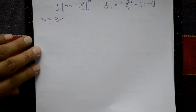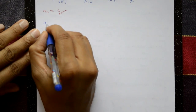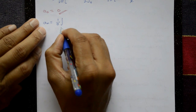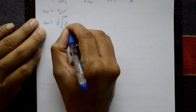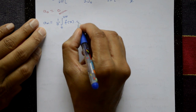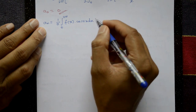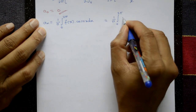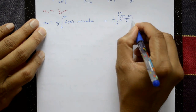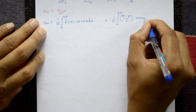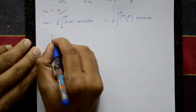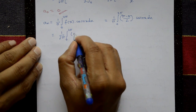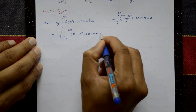Now find aₙ. The formula is aₙ = (1/π) × integration from 0 to 2π of f(x)cos(nx) dx. Substituting f(x) = (π - x)/2: aₙ = (1/2π) × integration from 0 to 2π of (π - x)cos(nx) dx.